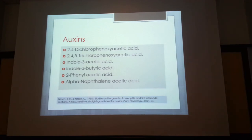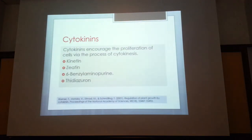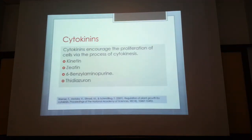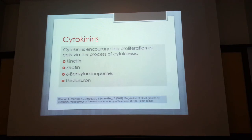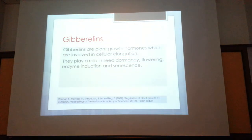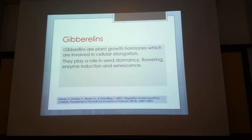Cytokinins include kinetin and zeatin. Kinetin is used in the lab because it is commercially available; zeatin, derived from Zea mays (maize), is very expensive but has almost similar effects. An interesting compound is thidiazuron, which was discovered by accident as an agricultural chemical but found to have cytokinin activity. Because it is much less expensive than kinetin, it can be used commercially as a cytokinin substitute.